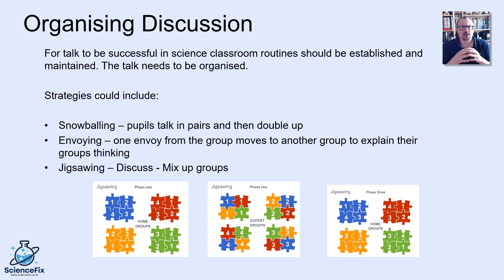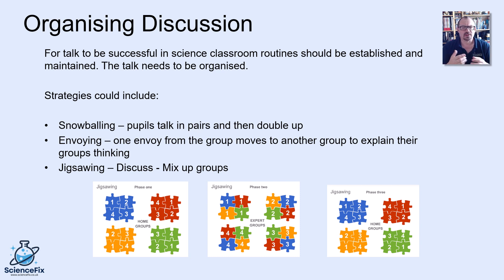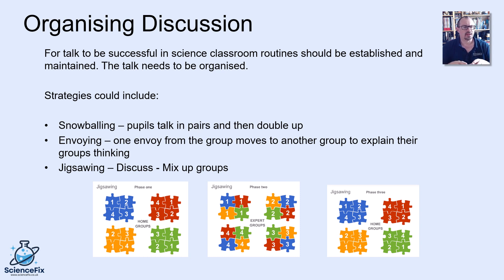A quick word on organizing discussion - there are some different things you can do to help children in terms of classroom routines and grouping. There's obviously just talking at your tables, which is fine. You might try snowballing: start in pairs, pairs get into fours, fours get into eights, getting bigger each time. You may have envoying, where you discuss as a group then one member goes to another table to explain what your group found out, and that person moves to another table, and so on. You might also have jigsawing: start off in tables one, two, three, and four, number everyone within each table, then all the ones get together, all the twos, threes, and fours, so each table mixes up with others to discuss what they found out.